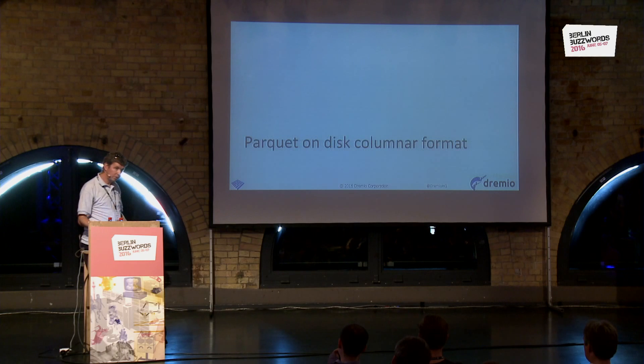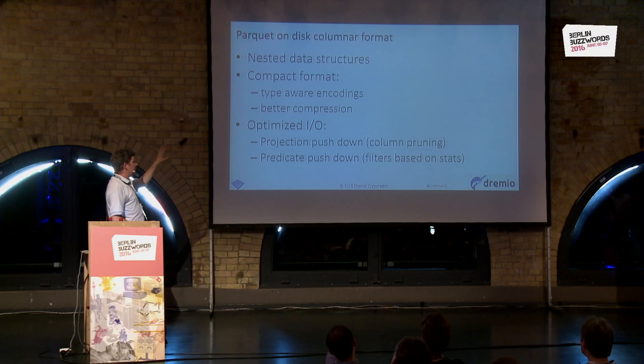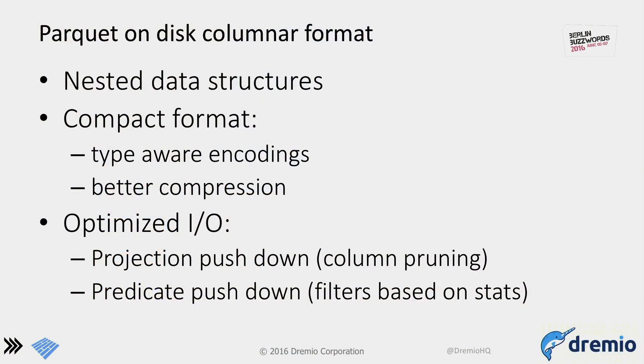Both Parquet and Arrow support nested data structures, because real-life data is nested with lists of nested objects several layers deep. Parquet is a compact format, providing better compression than row-oriented formats with brute-force compression on top. That's because of type-aware encodings: for integers we know the max value and can make them compact, and for strings we can do dictionary encoding — building a dictionary and encoding only integers — which is much more compact.